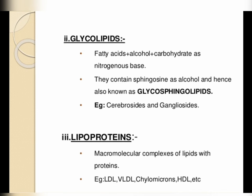Glycolipids are a combination of fatty acids, alcohol, and carbohydrate as a nitrogenous base. They contain sphingosine as alcohol and are hence also known as glycosphingolipids; an example is gangliosides. Lipoproteins are macromolecular complexes of lipids and proteins; examples include LDL, VLDL, chylomicrons, and HDL.